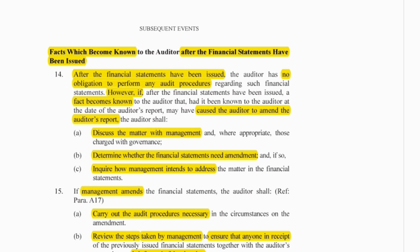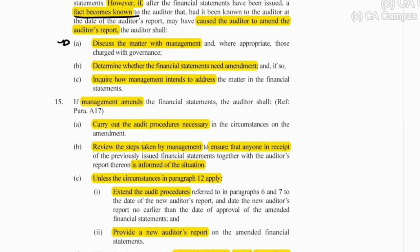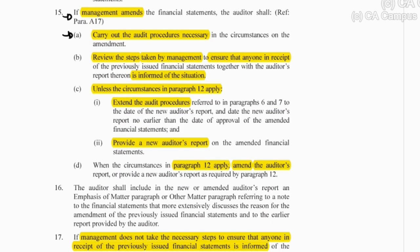Period 3 is when facts become known after the financial statements have been issued and given to the users. Once again, we have no obligation to perform any audit procedures. However, if facts become known that may have amended our audit report, we need to discuss the matter with management to identify whether the financial statements need amendments, carry out audit procedures to test the amendments, review the steps management take to inform users who have the financials, and extend the Period 1 procedures to the new audit report date.